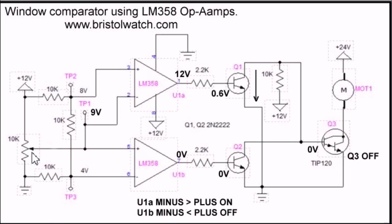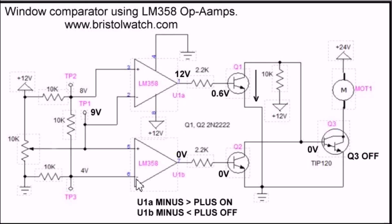In this slide, I have adjusted my 10k potentiometer to produce nine volts. Referring to our upper comparator, the minus input is now greater than the positive input at eight volts. We output 12 volts, which biases on Q1 and shunts the voltage and current from the 10k pull-up resistor to ground, automatically turning off Q3 and the motor. It doesn't matter what condition the lower comparator is in — the motor is already shut off. Looking at our lower comparator, the positive input at nine volts is still greater than the four volts on the negative input, so it's turned off and Q2 is off. But it doesn't matter: as long as one of Q1 or Q2 is turned on, it will kill the output to the motor.